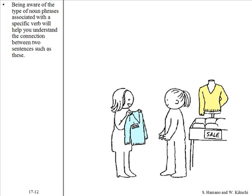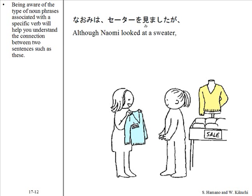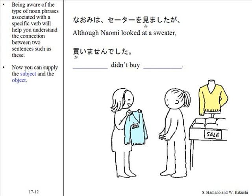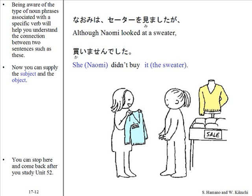Being aware of the type of noun phrases associated with a specific verb will help you understand the connection between two sentences such as these. Naomi wa seetaa wo mimashita ga, kaimasen deshita. Now you can supply the subject and the object. You can stop here and come back after you study Unit 52.